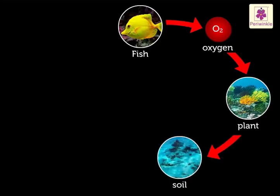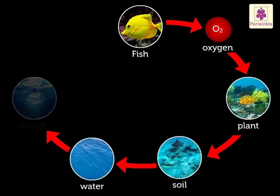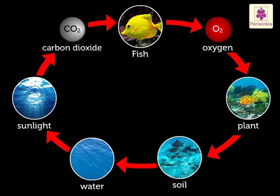The plants use the soil, water, sunlight, and the carbon dioxide given out by the fish to produce their food and release oxygen, which dissolves in the water and which the fish breathe. It is a continuous process.